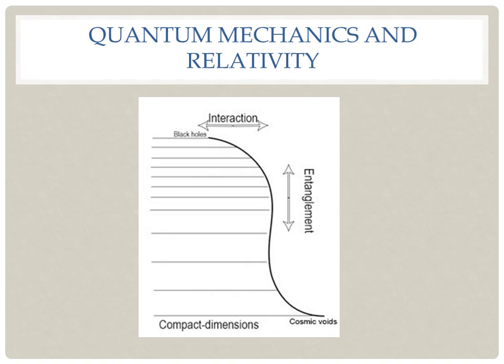The increasing pressure that results from the positive curvature field is sensed as increasing gravity, which reaches its maximum in black holes, where the movement of objects is inhibited.